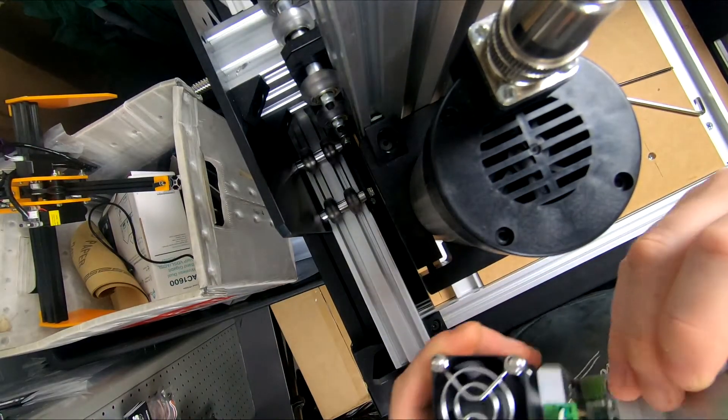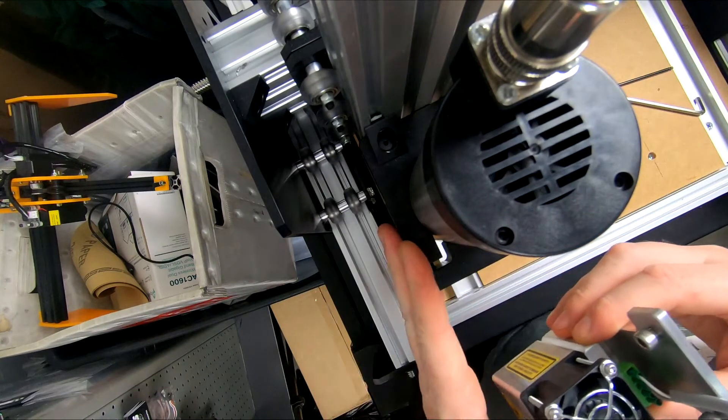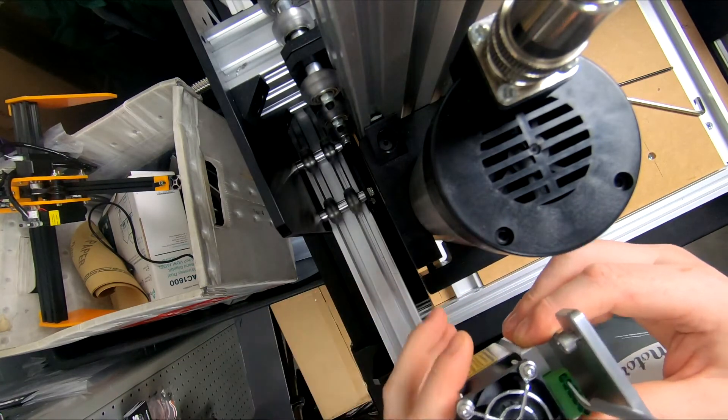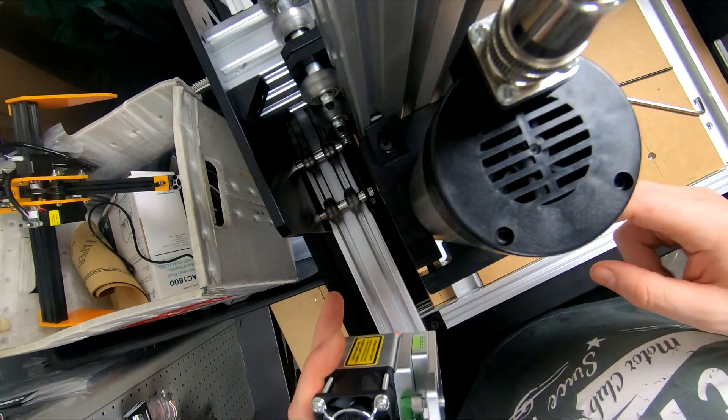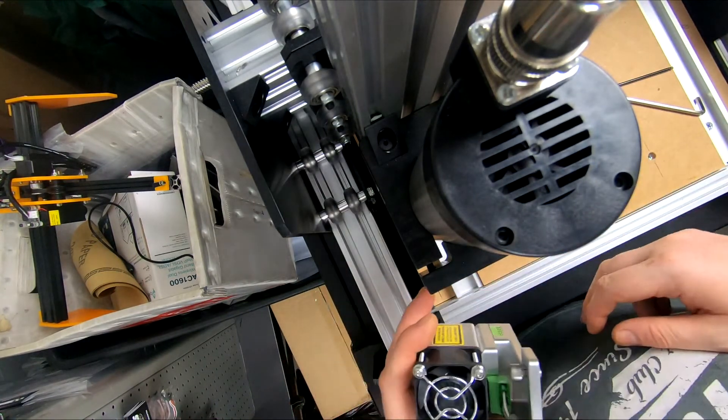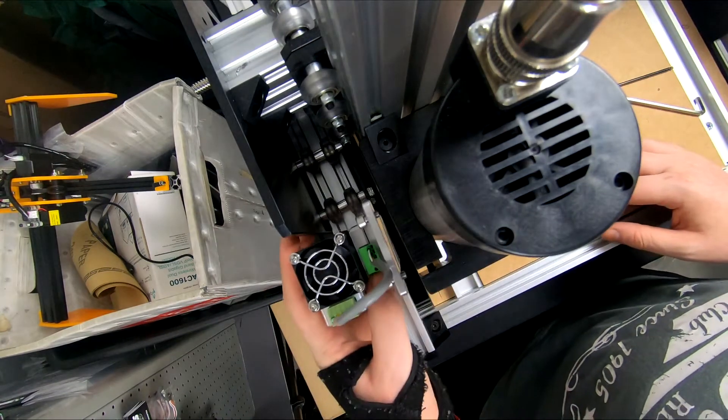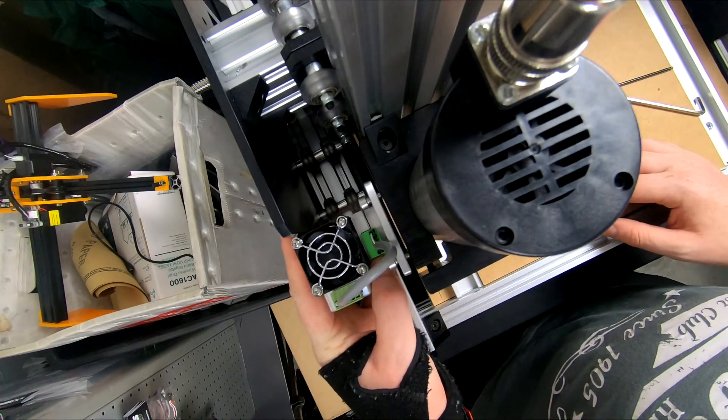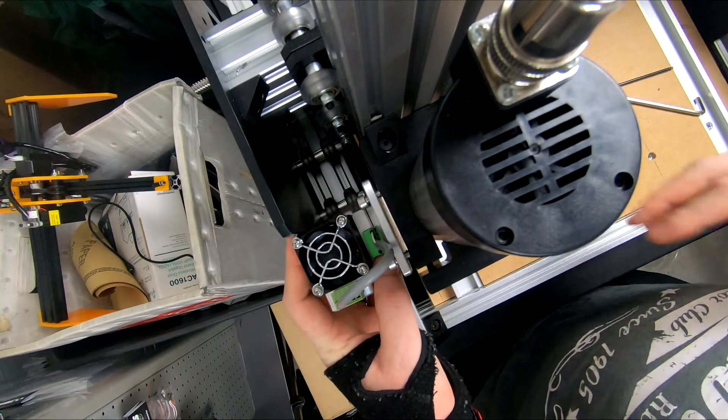All right, so we installed the laser on and then we thought we'd run a homing cycle just to check it would fit. We home our CNC to the front left like our printers just to keep it a lot easier. But we've noticed that if it's mounted up in the normal holes, it will collide with this plate here. So it's just something to be aware of if you guys home to the front left.